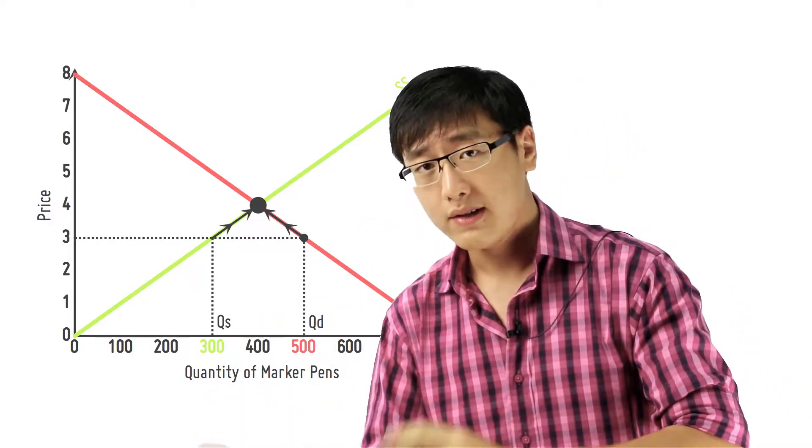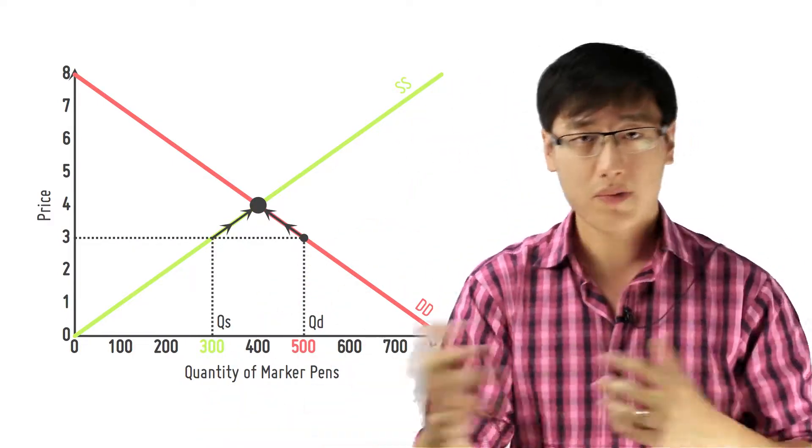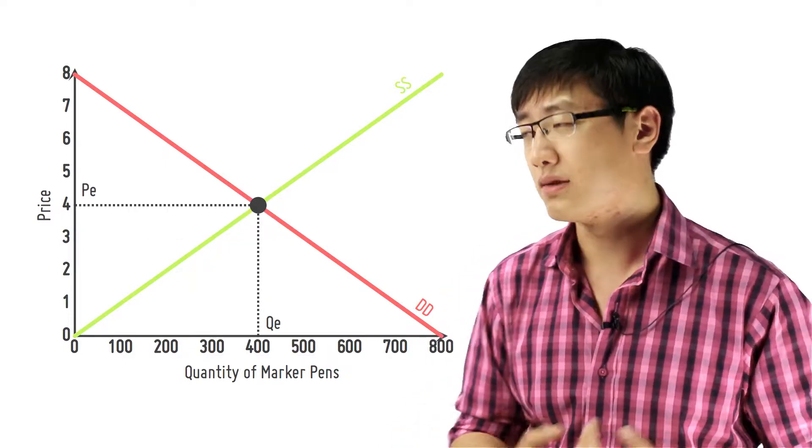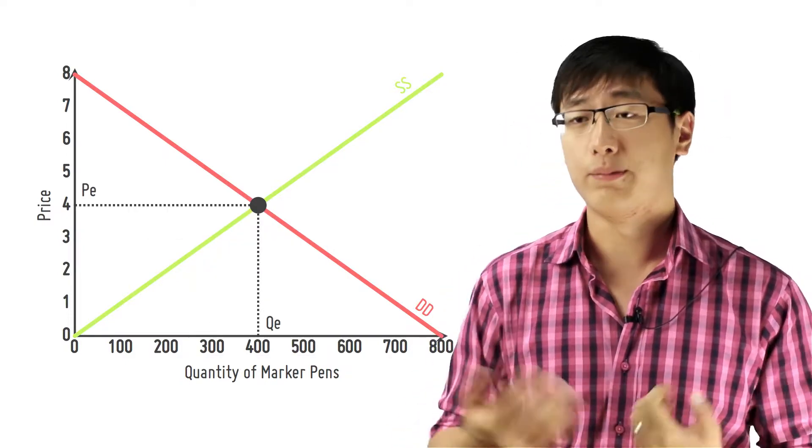At the same time, the consumers, they will bid up the price because all of them will be competing to get the products and eventually the price increases and they settle at the equilibrium quantity and price.